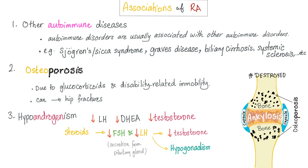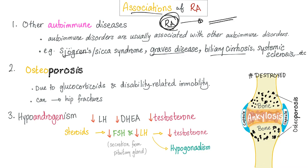Associations of rheumatoid arthritis — other autoimmune diseases. Never forget: autoimmune disorders are usually associated with other autoimmune disorders. A patient with rheumatoid arthritis is more likely to also have another autoimmune disease — for example, Sjögren's syndrome, Graves' disease, primary biliary cirrhosis, or systemic sclerosis (formerly known as scleroderma).